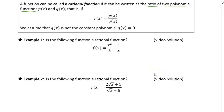Let's take a look at this first example. We have x squared over five minus four over x. As it is now, this is the difference of two rational functions, but it's not written as a single rational function. All we need to do is be able to rewrite it as a rational function. So let's see if we can do that.